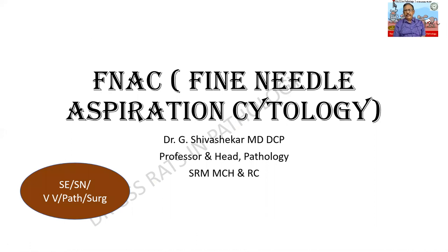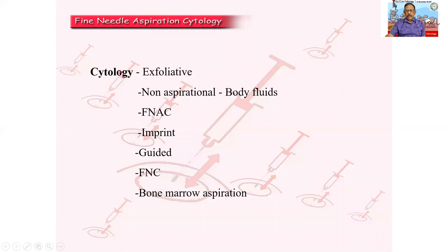The next topic is fine needle aspiration cytology. It is of paramount importance both in clinical practice and in the examination. In surgery, it is of great significance. Cytology means it is just a study of cells — it can be exfoliative cytology, from body fluids, or from solid swellings by aspiration, which is called fine needle aspiration cytology. Imprint is when I cut a specimen and apply the slide to get some cells. Guided is when I use an ultrasound to go to the particular site. FNC means fine needle cytology — no aspiration. And bone marrow aspiration is another area in hematology where aspiration is used for cytology.